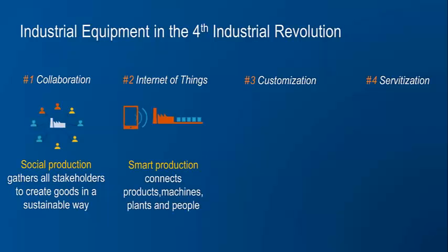Secondly, the Internet of Things leads to smart production, connecting products, machines, plants and people. A GE plant manager has been able to launch his factory with his iPad from home after receiving a warning that a storm had stopped production. You need intelligent devices to build intelligent products.